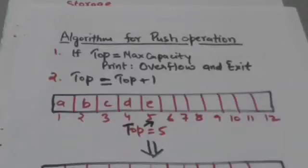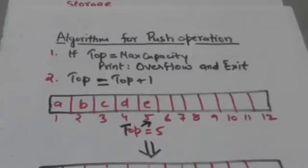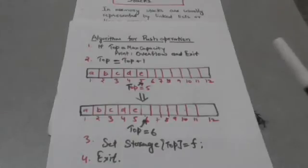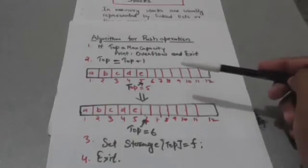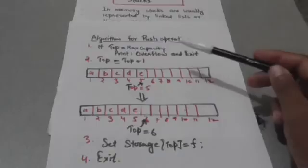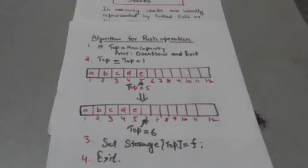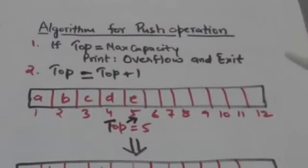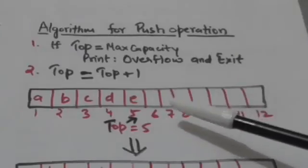Now, how can we add an element into this stack storage which is implemented by a linear array in memory? This is the algorithm for the push operation on stack storage. This algorithm adds an element F into stack storage. Here it is assumed that the lower bound of array storage is 1.